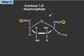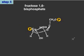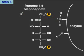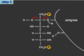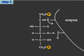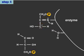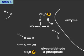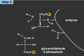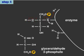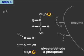Step 4 of glycolysis begins with the opening of the ring form of fructose-1,6-bisphosphate into its open-chain form. The enzyme aldolase cleaves fructose-1,6-bisphosphate into two molecules: the 3-carbon glyceraldehyde-3-phosphate, and a second 3-carbon molecule, dihydroxyacetone phosphate.